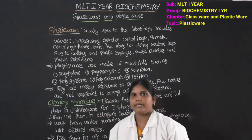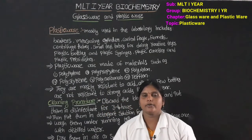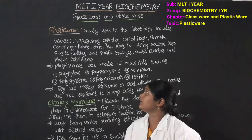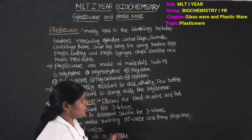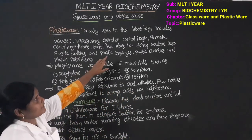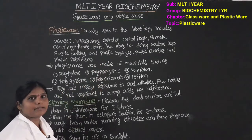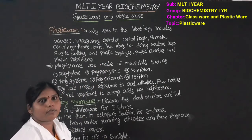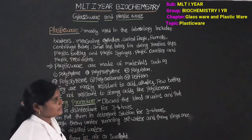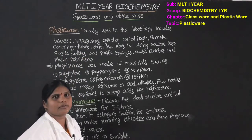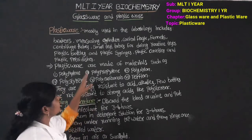We have beakers — we can prepare the reagents using beakers. There is also the inko bottle — a reagent storage bottle. Next are centrifuge tubes; we have centrifuge tubes of conical shape, plastic centrifuge tubes available.